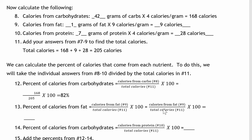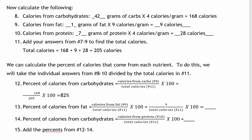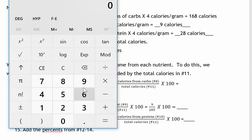The calories from fat can be found in number nine. Number nine says we have nine calories from fat. The total calories from number 11 is the same as in number 12. That was 205 calories. So we'll change nine out of 205 to a percent using our calculator. Nine divided by 205 equals 0.0439. Change that into a percent by multiplying by 100 to move the decimal two places to the right. That means we have 4 percent of our calories from fat.